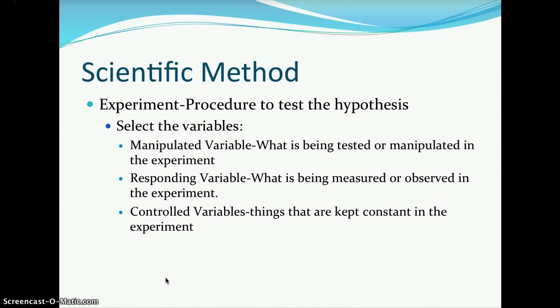When experimenting, you need to identify your variables. The manipulated variable is the variable being tested — the thing the researcher is going to change. The responding variable is the variable that will be measured or observed, collecting qualitative or quantitative data; it changes in accordance with what you've manipulated. Everything else should remain constant — those are your controlled variables. For example, if you are manipulating temperature in an aquatic ecosystem, then light, pressure, and salinity would all need to remain the same.